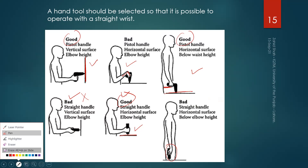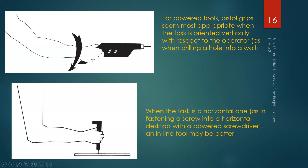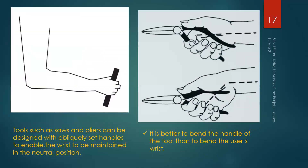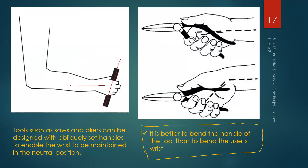In summary, whenever you have to bend your forearm or hand that is a bad posture, meaning the handle design being used is not appropriate. If you don't remember these examples, just remember the rule of thumb: a good handle design will help you keep your forearm and wrist in alignment when performing the task. The basic conclusion is that it is better to bend the handle of the tool than to bend the user's wrist.